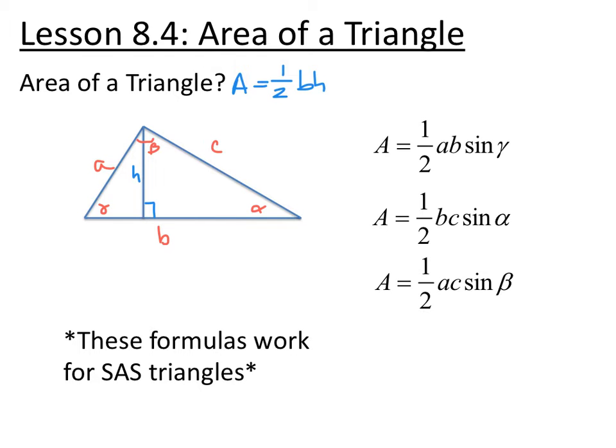I'm going to use my right triangle trig, looking at this right triangle, and I'm going to use sine. Sine of this angle alpha is our opposite, which is h, over our hypotenuse, which is c.